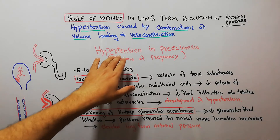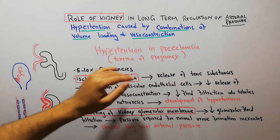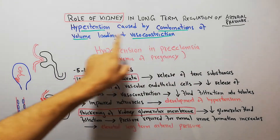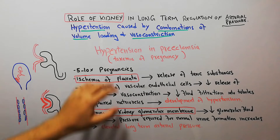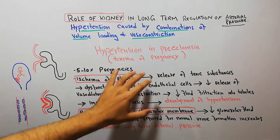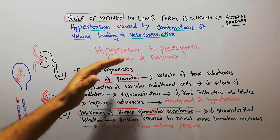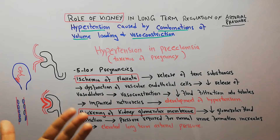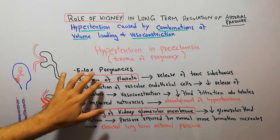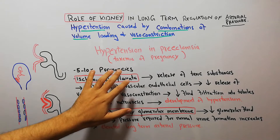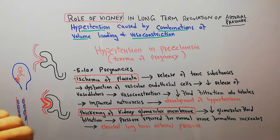Today in this lecture we are going to talk about hypertension in preeclampsia or toxemia of pregnancy. We are discussing types of hypertension due to combinations of volume loading and vasoconstriction. Preeclampsia is a condition which occurs in around 5 to 10% of pregnancies and it is basically a combination of hypertension, pedal edema, and protein loss in urine.